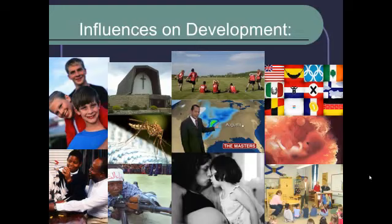If you were to consider all of the things that influence human development, you could come up with a list of dozens, hundreds, or even potentially thousands of things that impact the person that we become. Some things are obvious, like our parents or our siblings, or the religion that we're raised in, or the kind of access to education that we get. There are also things like the weather or prenatal environments that can influence the kind of person that we become. So it's the job of developmental theorists to put these influences into categories or into theories to help us understand how this all works cohesively.